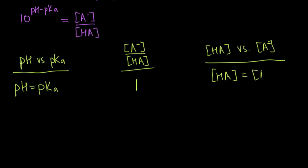I forgot a minus sign there. This is a really helpful thing to remember. Anytime you have a buffer and the pH of your solution is equal to the pKa of your buffer, you immediately know that the concentration of your acid and its conjugate base are the same. And this comes up a lot, not just when you're talking about buffers by themselves, but also when you're doing titrations.